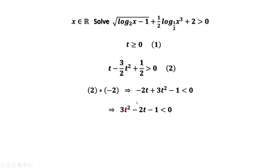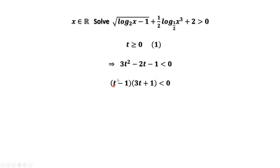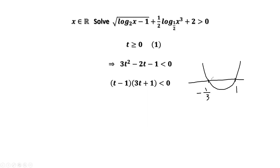How to solve this inequality for t? Factoring the left-hand side. The left-hand side is a parabola. We have two zeros: t minus 1 equals 0 gives t equals 1, and 3t plus 1 equals 0 gives t equals negative one third. In the region between these two zeros, the curve is below the x-axis — it's less than 0 — so that part is the solution: t is bigger than negative one third and less than 1.